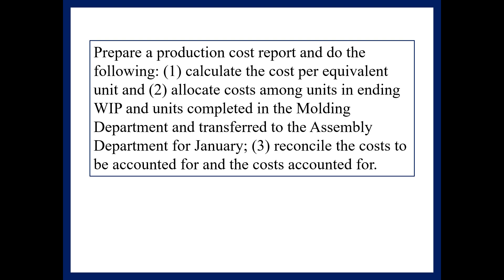Prepare a production cost report and do the following: calculate the cost per equivalent unit; allocate costs among units in ending work in process and units completed in the Molding Department and transferred to the Assembly Department for January; and reconcile the costs to be accounted for and the costs accounted for. These three steps are essentially what you do when you prepare a production cost report.